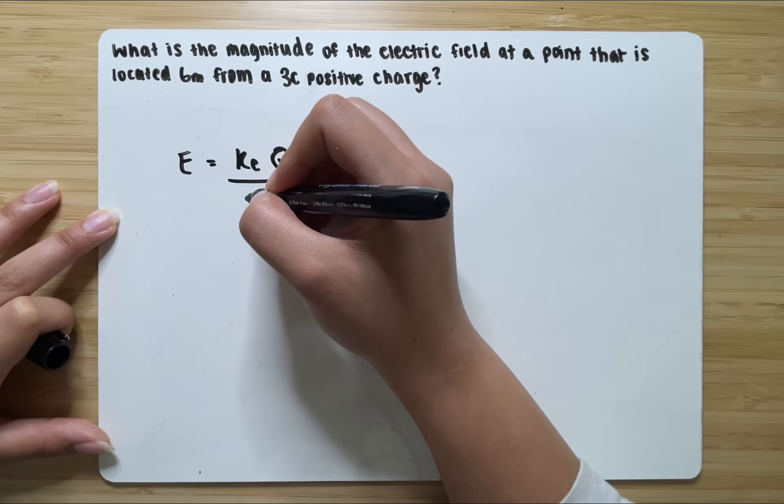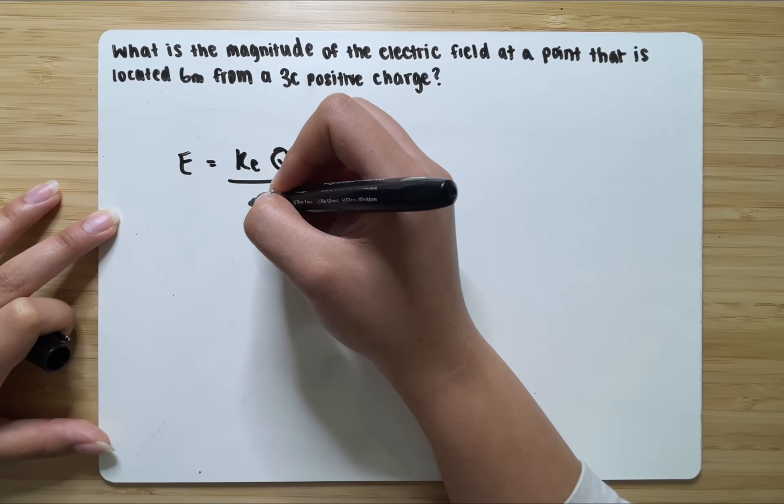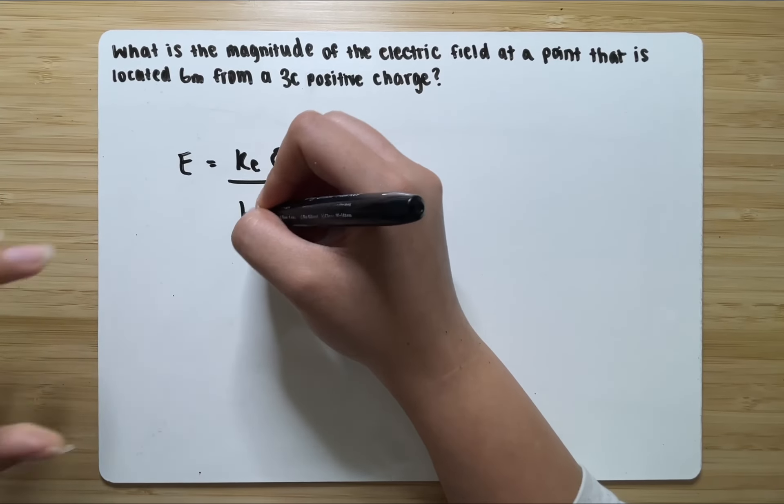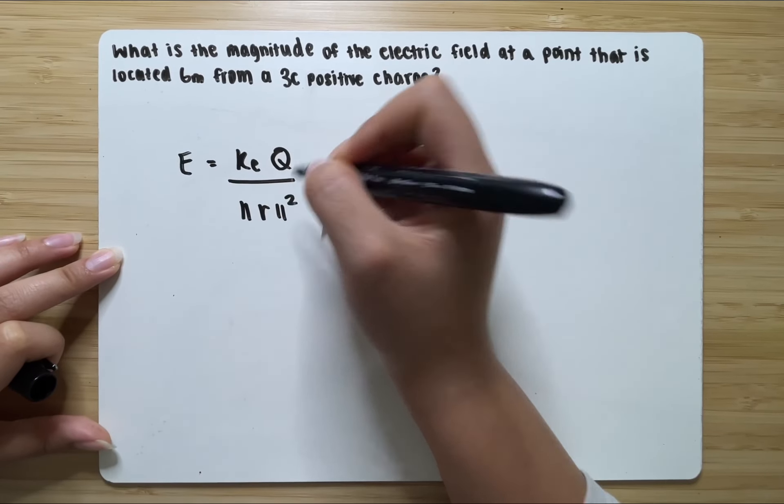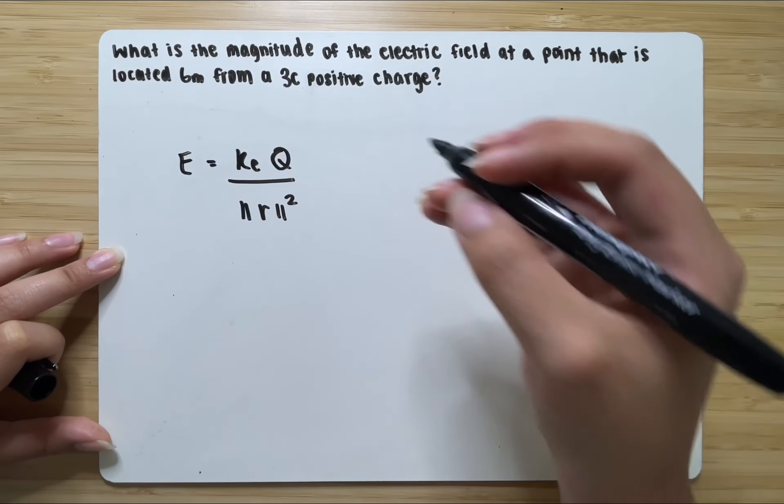Over the distance squared. So if we work with vectors, it would be the magnitude of the vector squared. If we work with something like this, it would just be the distance squared.